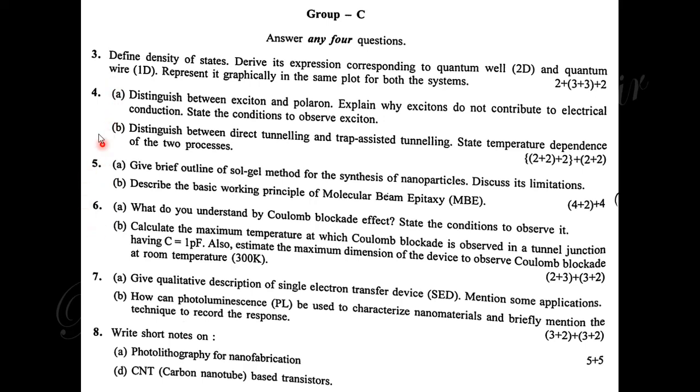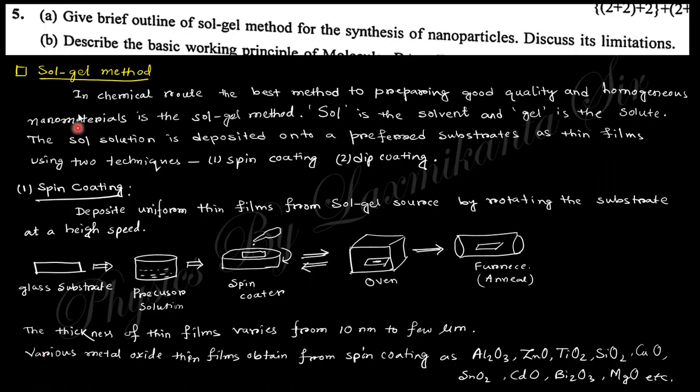Today we want to discuss question number 5 and 6. Let's start. First question says describe a brief outline of sol-gel method for synthesis of nanoparticles. Sol-gel method means this is a chemically-based route for making nanomaterials. This sol-gel method has two processes: spin coating and dip coating. Spin coating means if you have a precursor solution, you take a drop on the substrate.